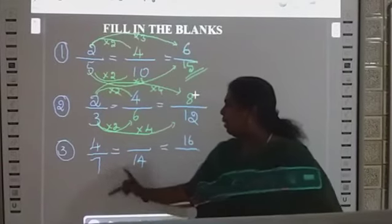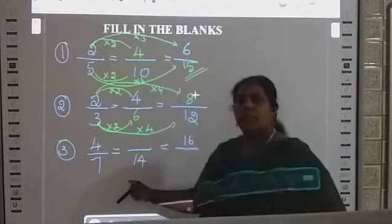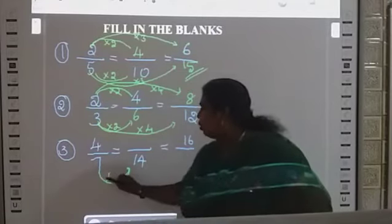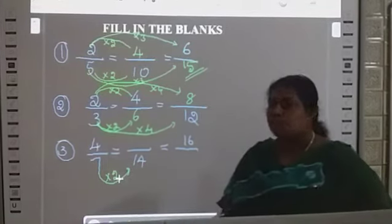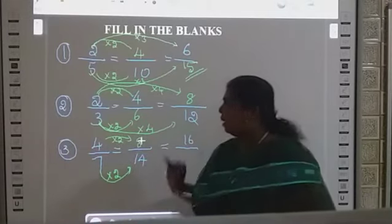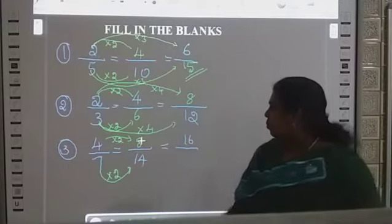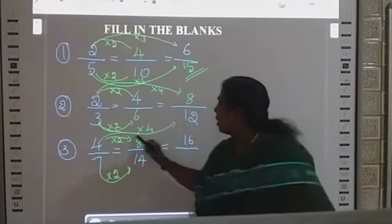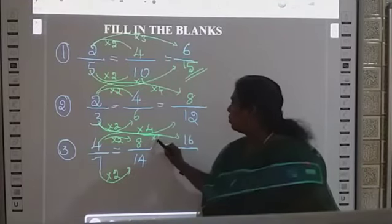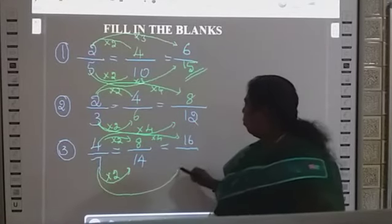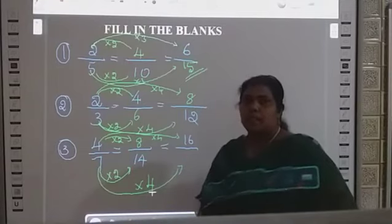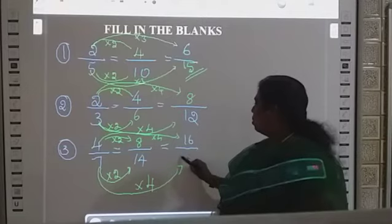Last question: 4 by 7 equals what by 14 — numerator is missing, denominator is 14. 7 goes into 14 two times. So multiply the numerator: 4 times 2 is 8. Next, 4 goes into 16 four times. So multiply the denominator: 7 times 4 is 28.